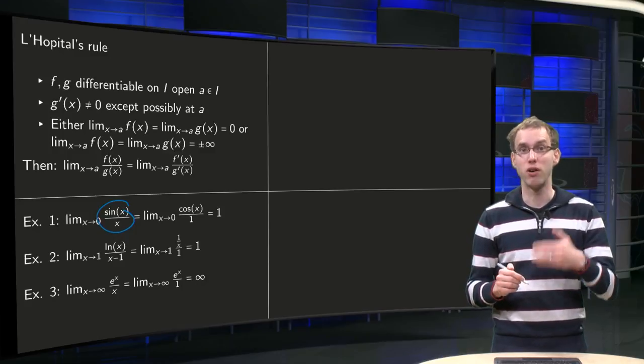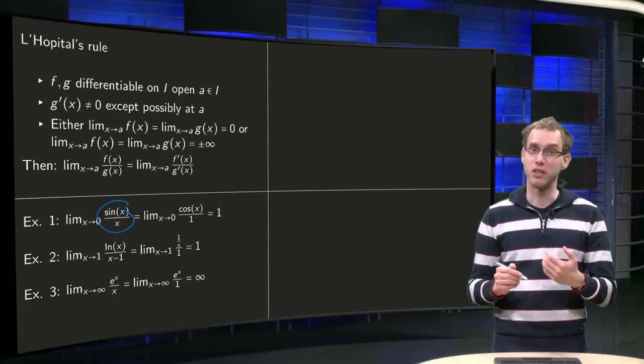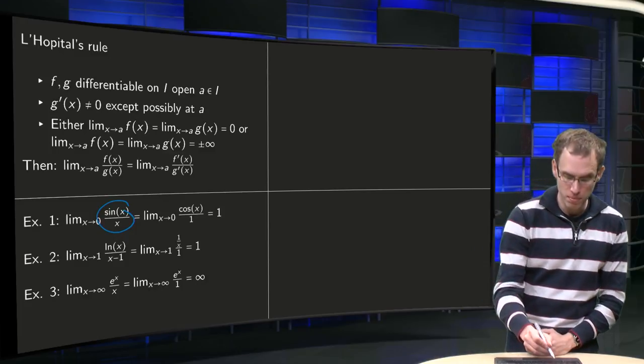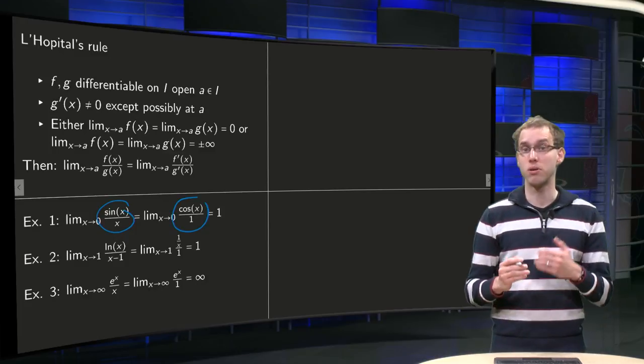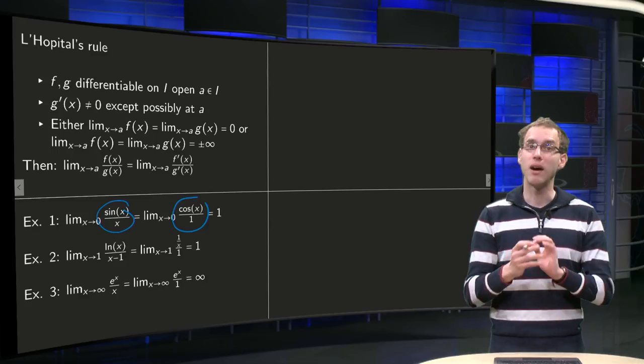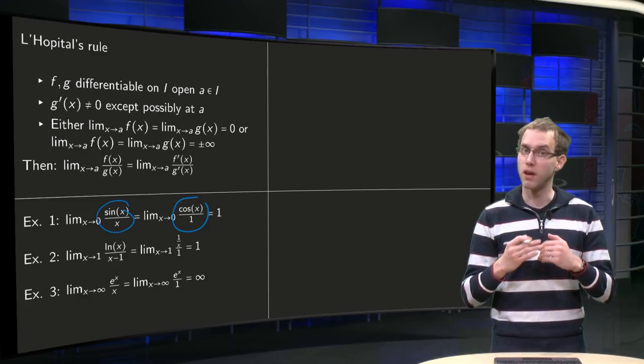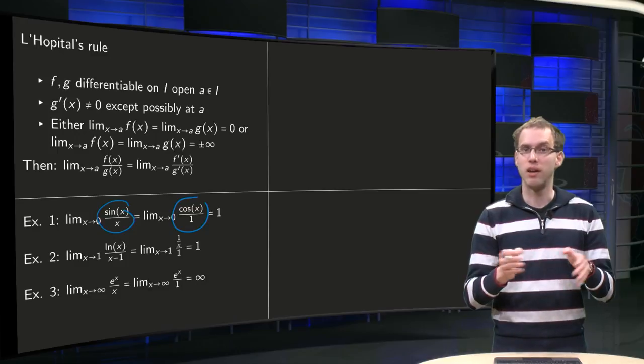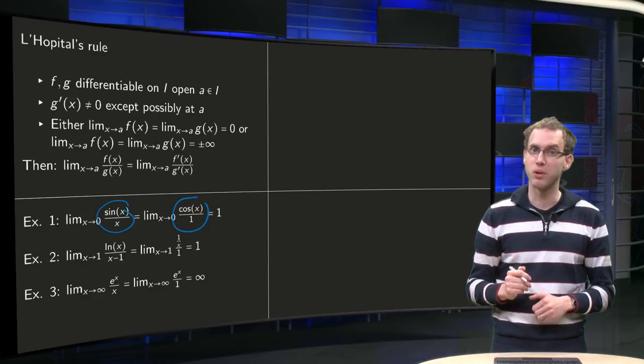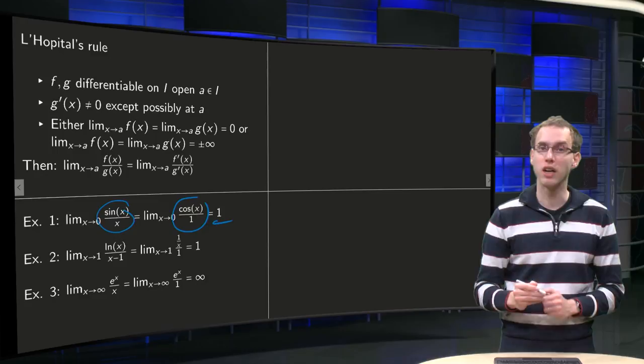Then we know that this limit x to 0 of f over g equals limit x to 0 of f' over g' equals cos x over 1. And now the indeterminacy has been removed and we can just apply any rule we like, plug x equals 0 in immediately and we get 1 as we knew already.